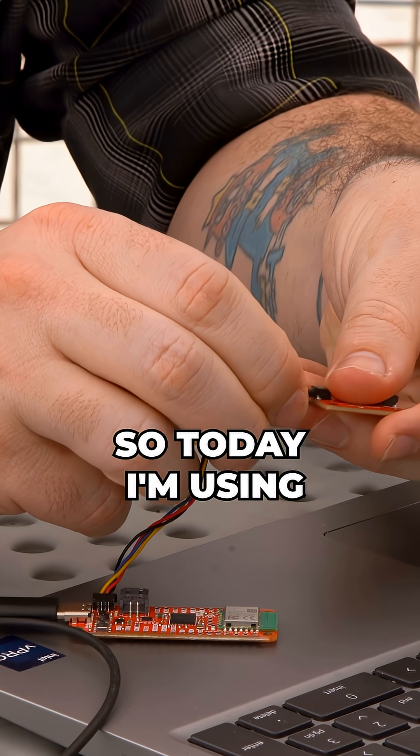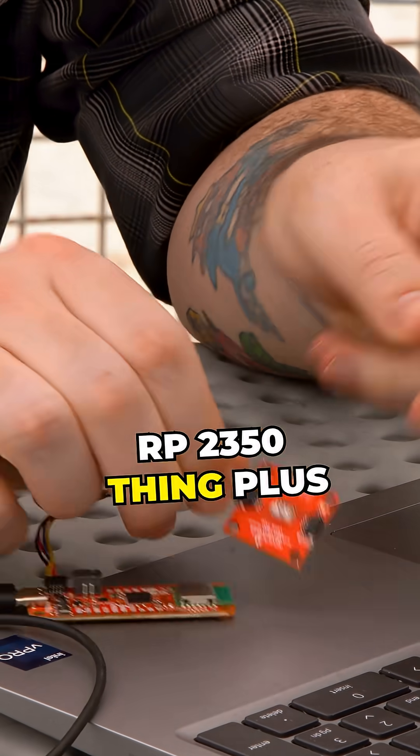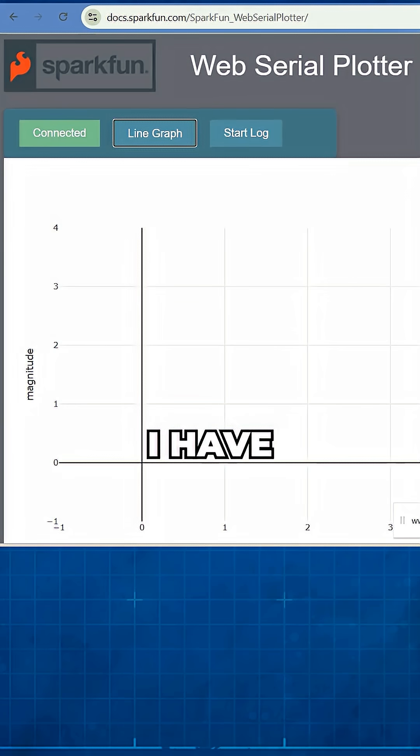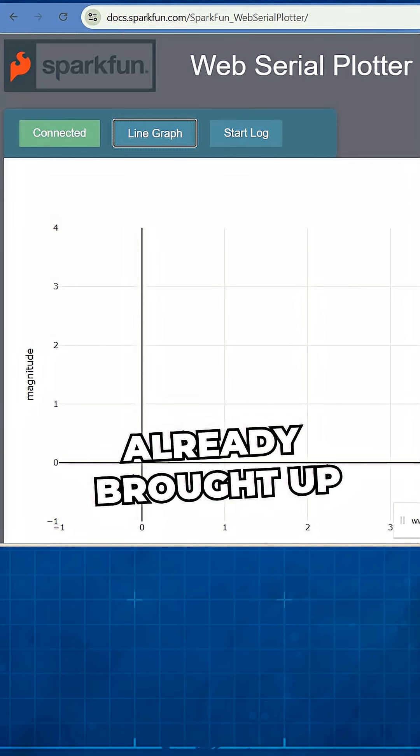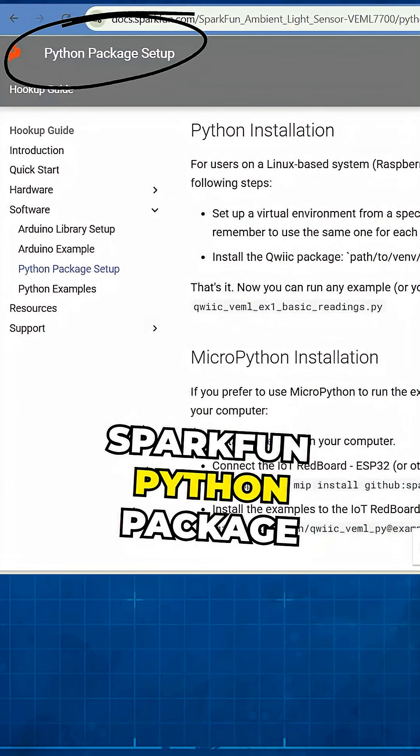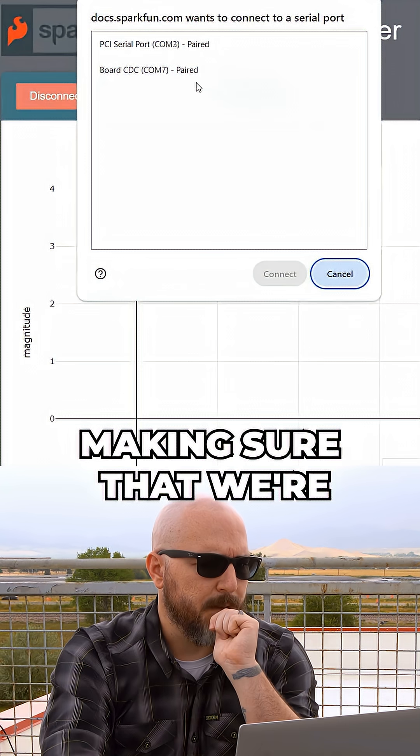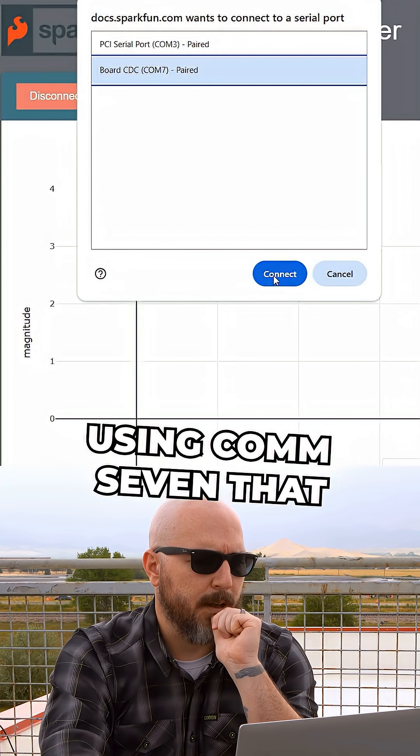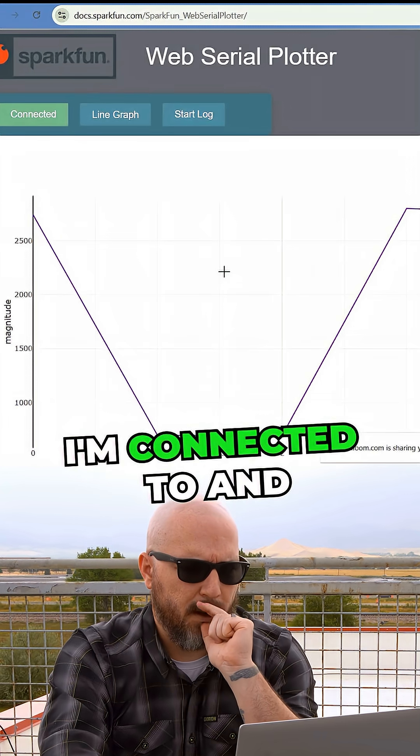So today I'm using the SparkFun RP2350 Think Plus. I have our web serial plotter already brought up. I am using our SparkFun Python package for this board, making sure that we're using COM7 that I'm connected to. And voila!